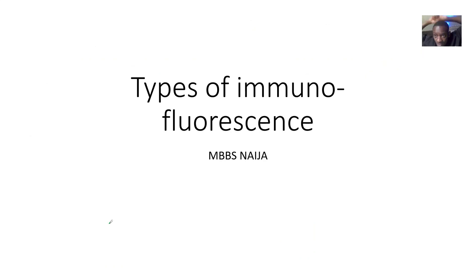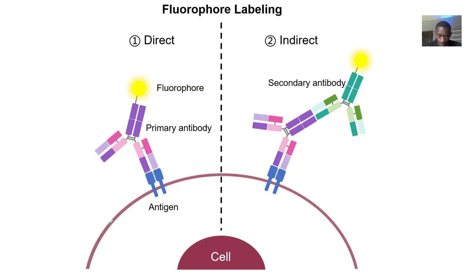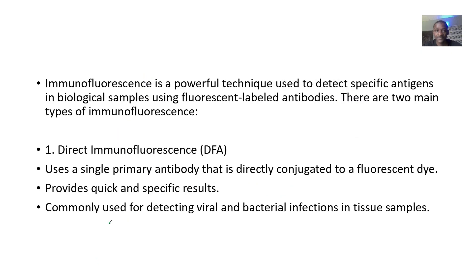We're quickly trying to look at different types of immunofluorescence and basically just talk briefly on what they are, how they are used and applied. Immunofluorescence is a powerful technique used to detect specific antigens in biological samples using fluorescent labelled antibodies.